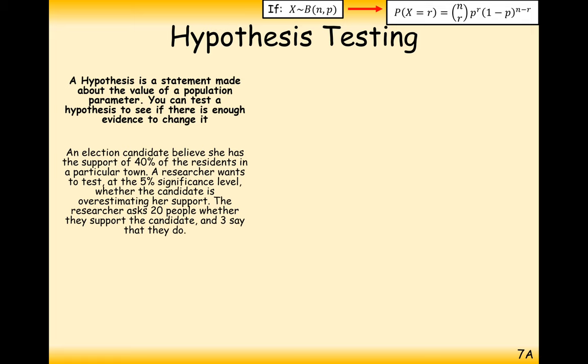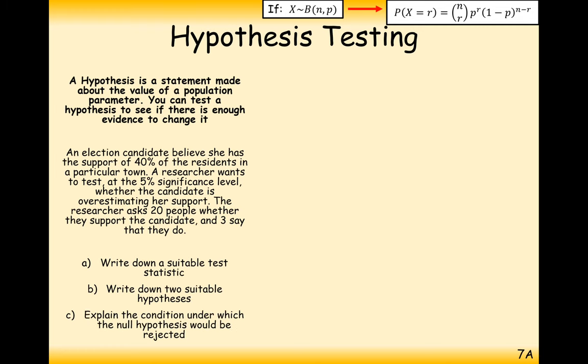Let's have one more look at an example here. An election candidate believes that she has the support of 40% of the residents in a particular town. A researcher wants to test to the 5% significance level, I'll describe what that means in a second, whether the candidate overestimates her support. The researcher asks 20 people and 3 say that they do, so it's not looking likely that it's going to be that 40%. Let's just analyse our definitions here.